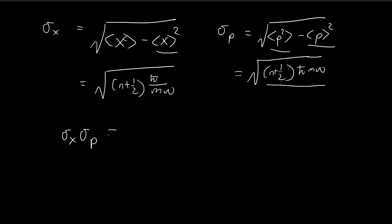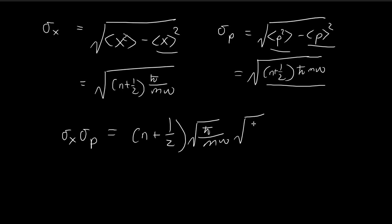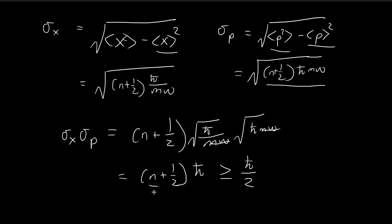Now we check the uncertainty principle by multiplying these two standard deviations together. There are two factors of n plus one-half, so we can eliminate the square root. The m omega terms cancel, and with two h-bar factors the product equals n plus one-half times h-bar. Since n runs over all integers from zero to infinity, this product is always greater than or equal to h-bar over two. So the uncertainty principle is always satisfied.